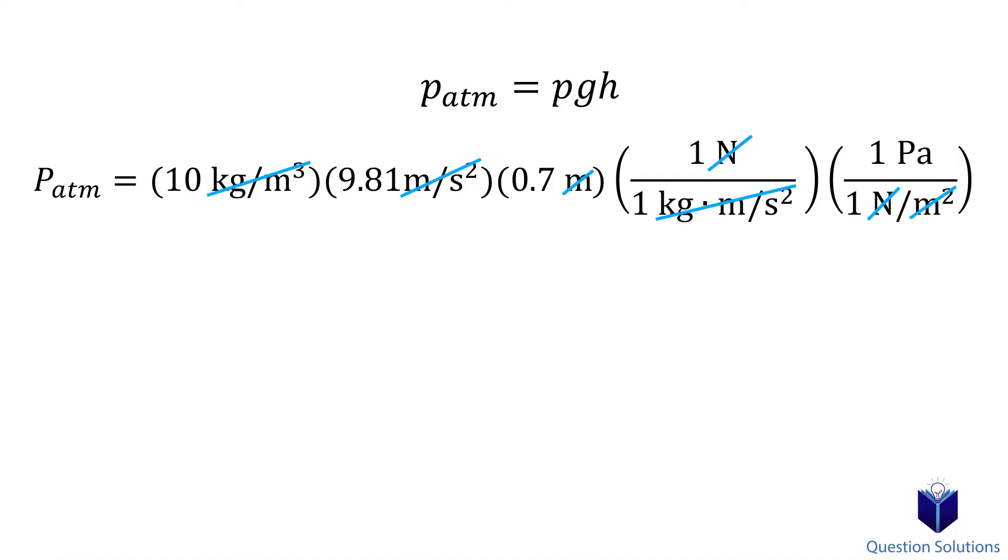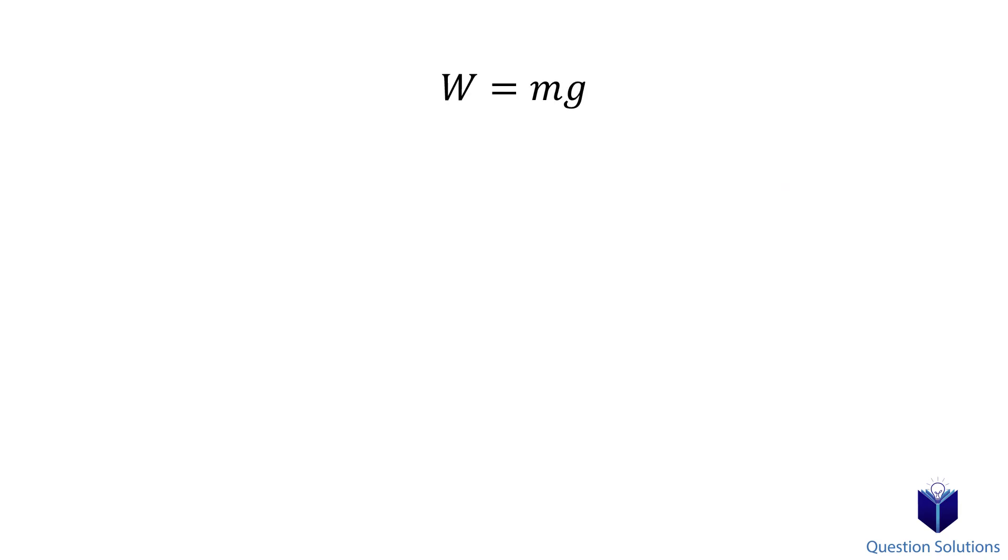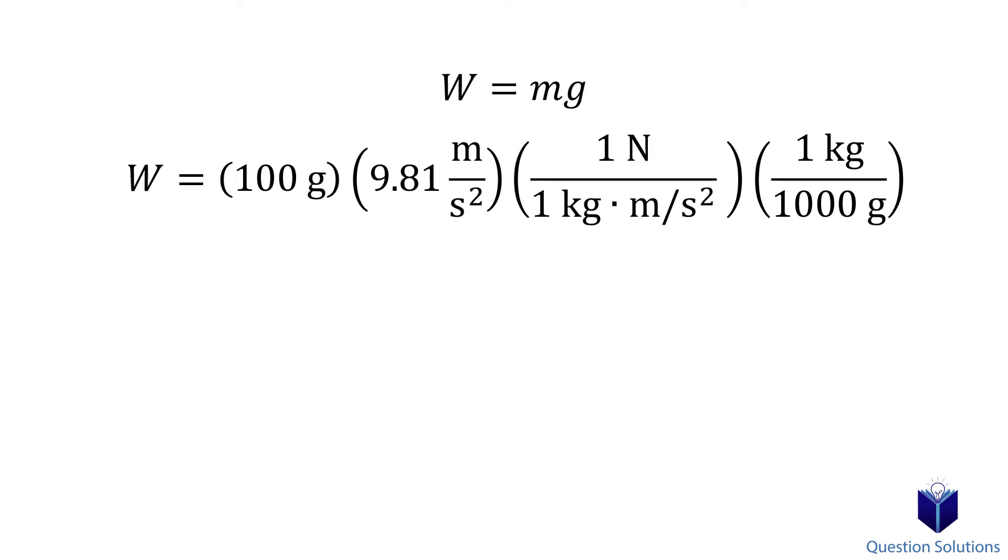Let's take a look at another simple example. Weight is equal to mass times acceleration due to gravity. Here our mass is given in grams instead of kilograms, so rather than writing it already converted, we can write a unity ratio. One kilogram is equal to 1000 grams.